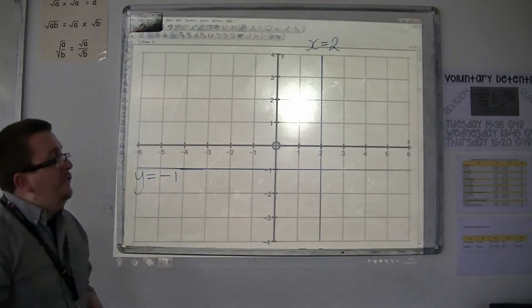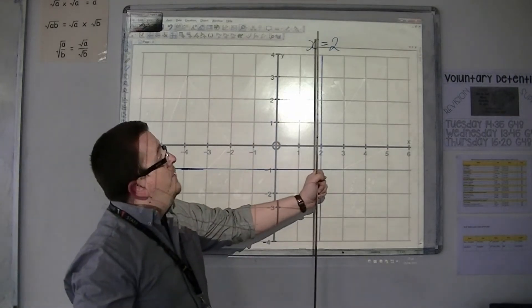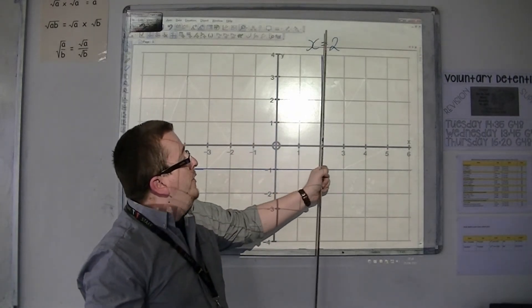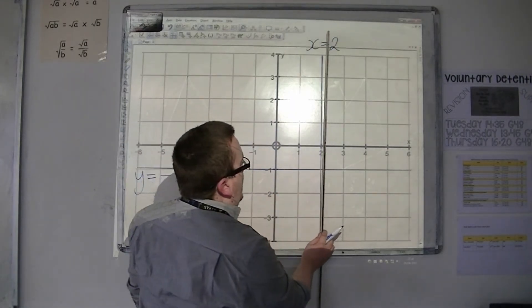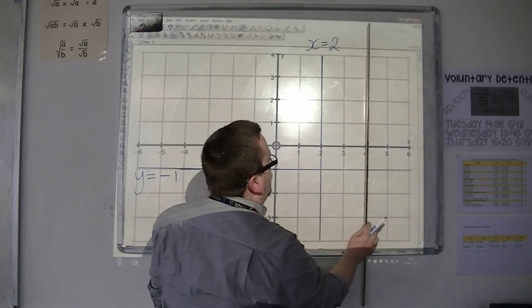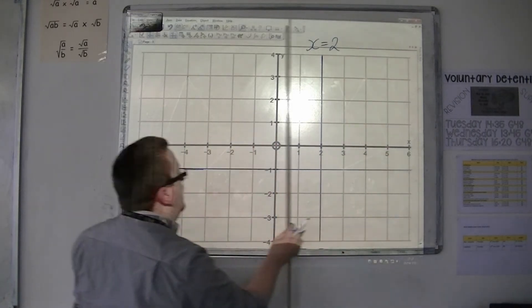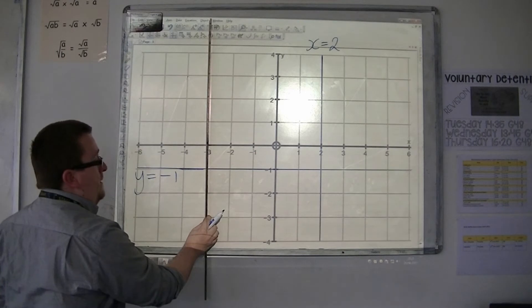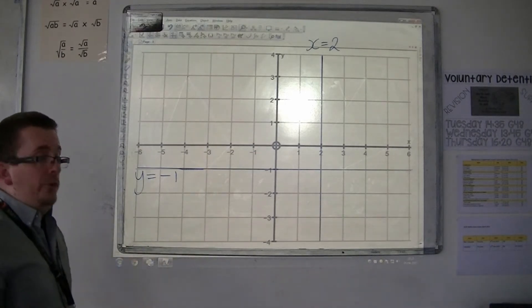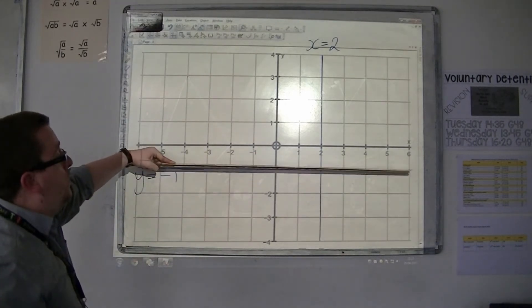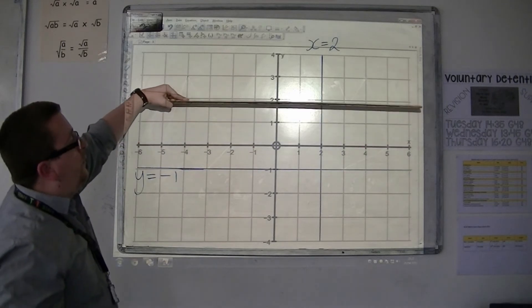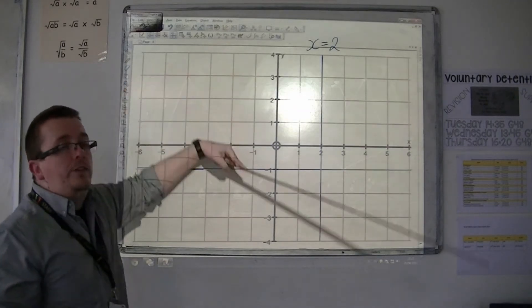So you can see that vertical lines are given to be x equals, so x equals 2, x equals 3, x equals 4, x equals 5, x equals minus 3, while horizontal lines are y equals, so y equals minus 1, y equals 2, y equals 3, and so on.